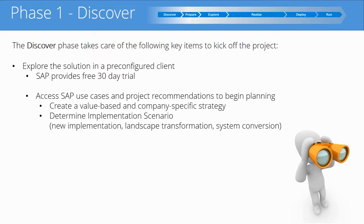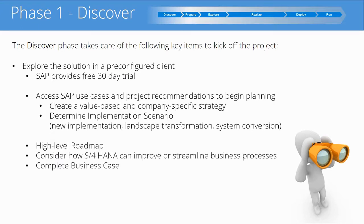The team will want to create a value-based and company-specific strategy designed specifically for this implementation, and there is a lot of help available in the SAP documentation for that. They will also want to determine the implementation scenario — whether this is going to be a new implementation, a landscape transformation, or a system conversion. Next, they'll look at a high-level roadmap of the entire project and consider how S4 HANA can improve or streamline business processes. This is the beginning of a fit-gap analysis. Finally, they'll complete a business case to present to management as a gate to exit the Discover phase.